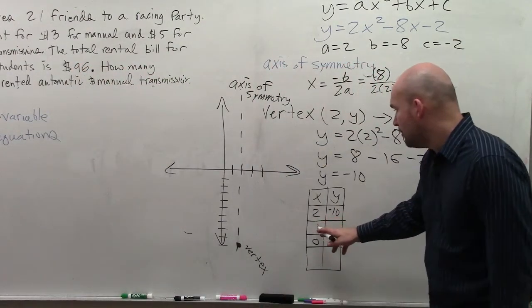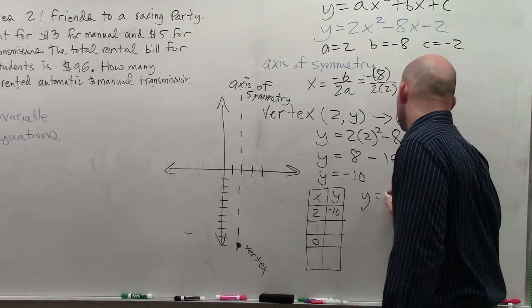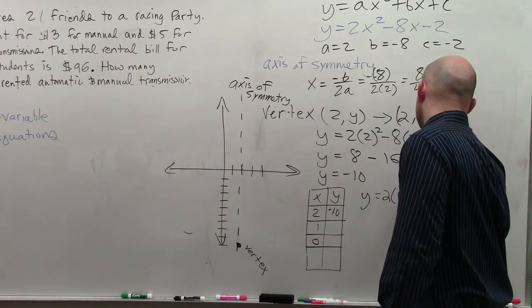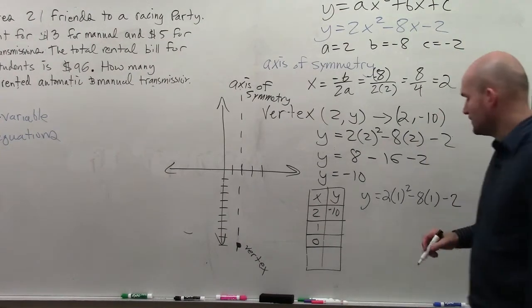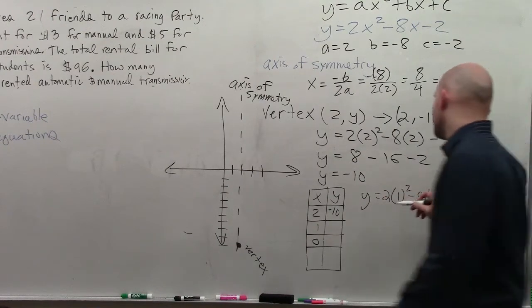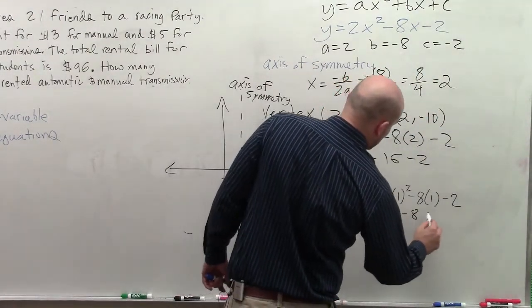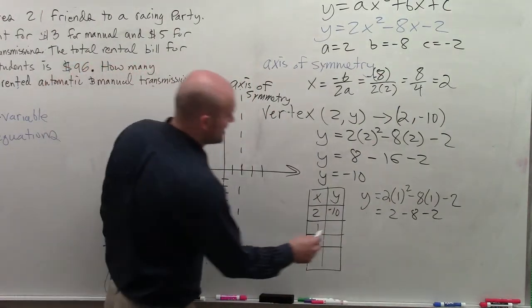So now, if I know x equals 1, what is the y-coordinate? Well, to figure that out, you just plug in 1. So now, 1 squared is 1. 1 times 2 is 2. So actually, let's just do this. So 2 minus 8 minus 2. 2 minus 8 is negative 6. Minus 2 is negative 8.